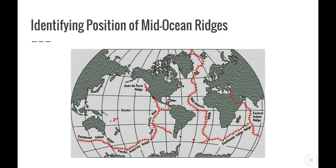This last picture shows the positions of the major mid-ocean ridges around the world. At each of these ridges, continental plates are moving apart and new molten rock is rising from underneath, forming ridges deep below the ocean. This gives us an idea of the location of our major tectonic plates around the world. That brings us to the end of this video — thank you for watching.